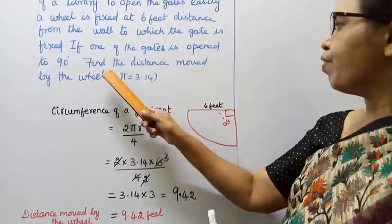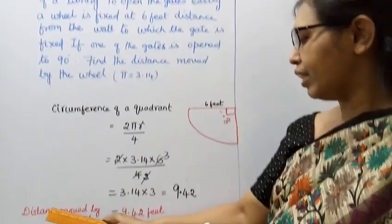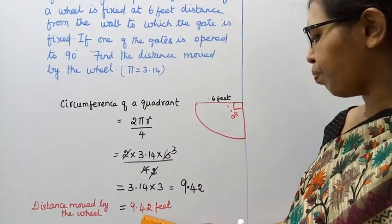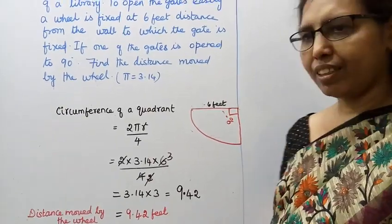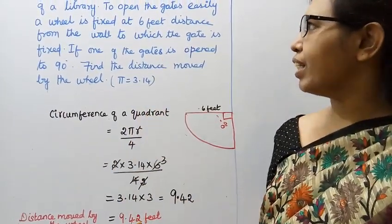Find the distance moved by the wheel: distance moved by the wheel equals 9.42 feet.